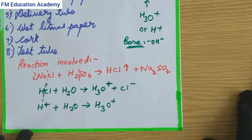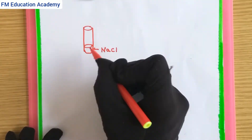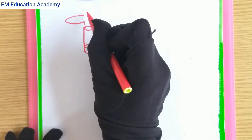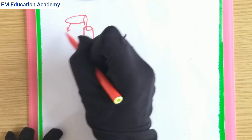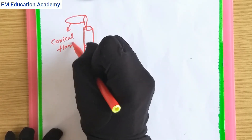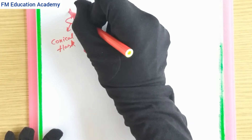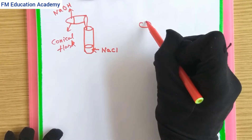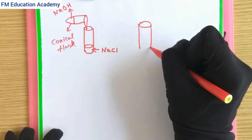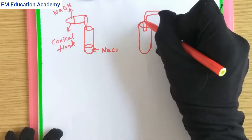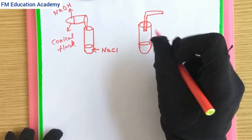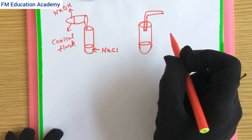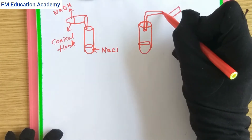Now, instead of sulfuric acid, we take sodium hydroxide in the conical flask and pour it into a new test tube containing sodium chloride. We then close this test tube with a cork and insert a delivery tube through the hole in the rubber cork. We bring a dry litmus paper near to the delivery tube to observe what happens with a base.